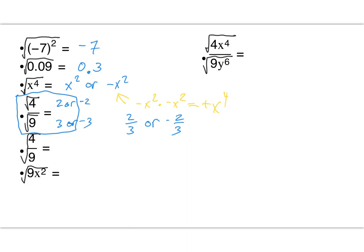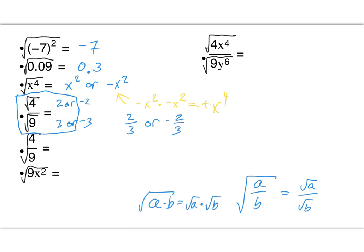Here's a property: if I have two values under one square root, I can split them — the square root of (a times b) equals the square root of a times the square root of b. Square roots can be split up when multiplying or dividing. What I cannot do: the square root of (a plus b) cannot become the square root of a plus the square root of b. Square roots cannot be split up for adding and subtracting. So the next problem has the same answer: plus or minus two-thirds.